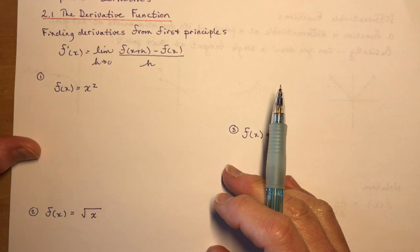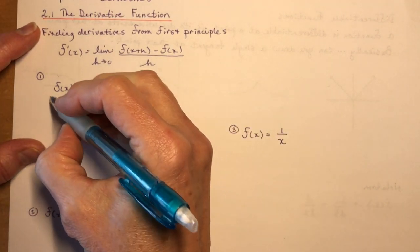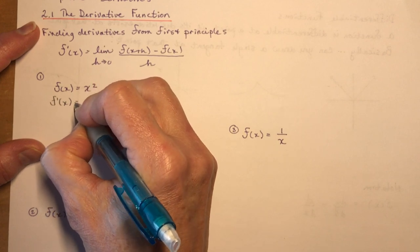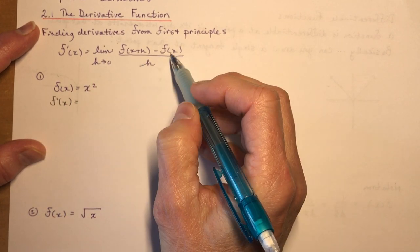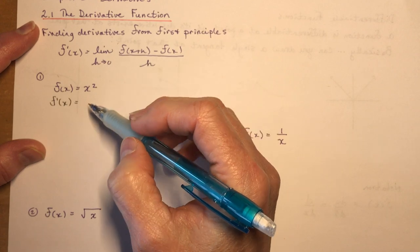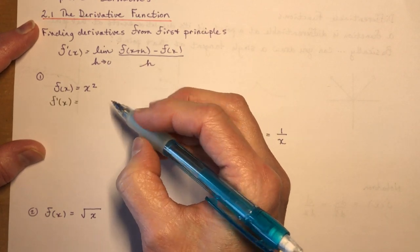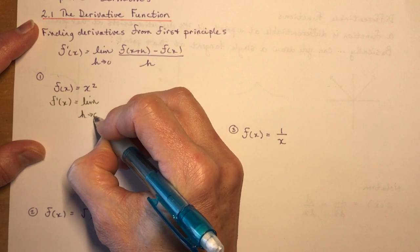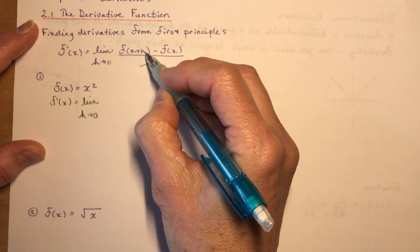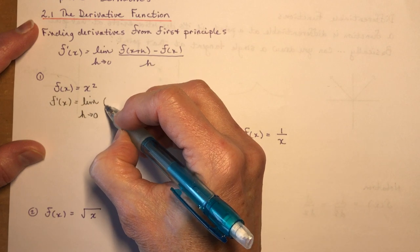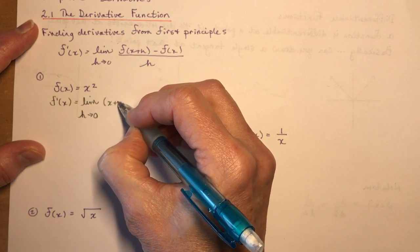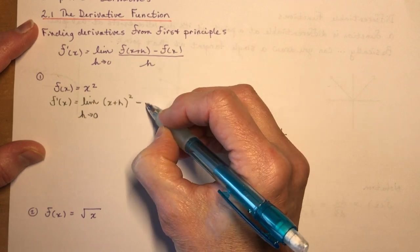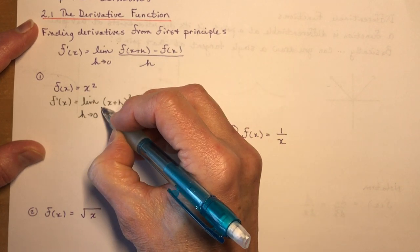So the first one, f at x equals x squared. First I write f'(x), then the limit as h approaches 0. So f at x plus h, you have x plus h squared minus f at x is x squared over h.